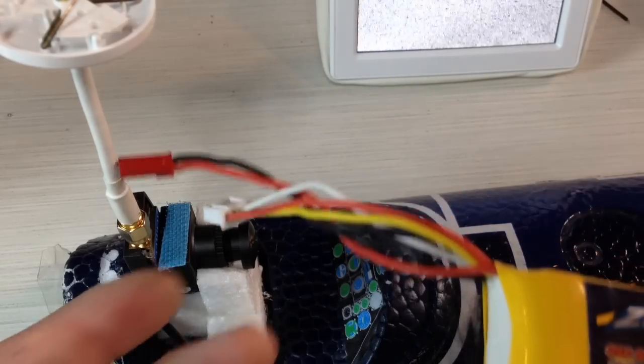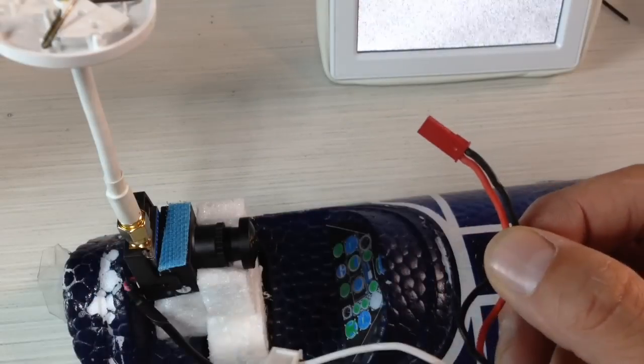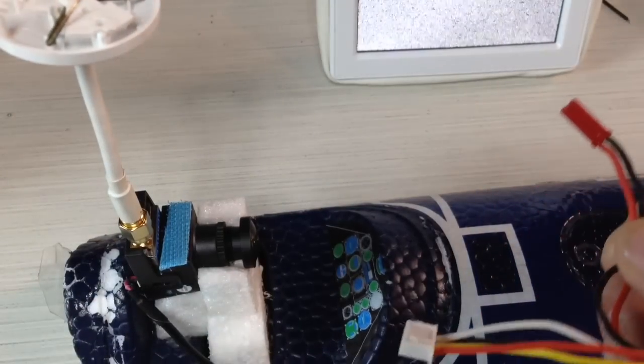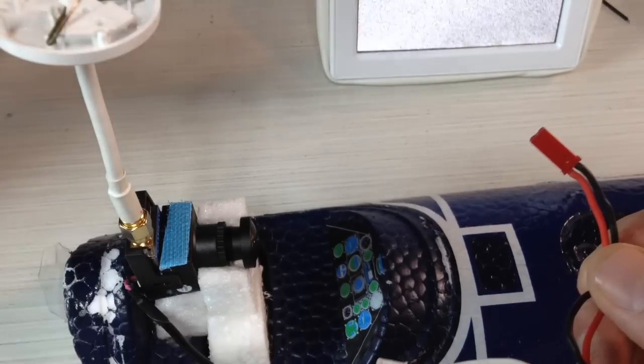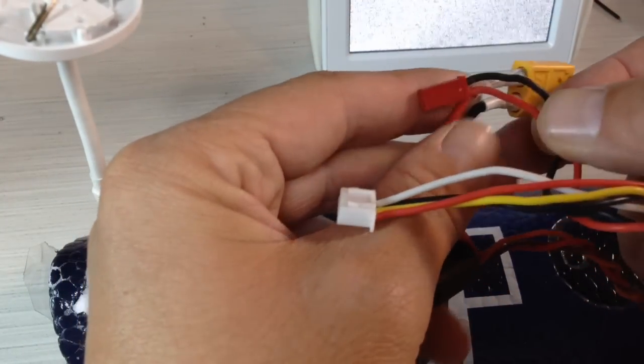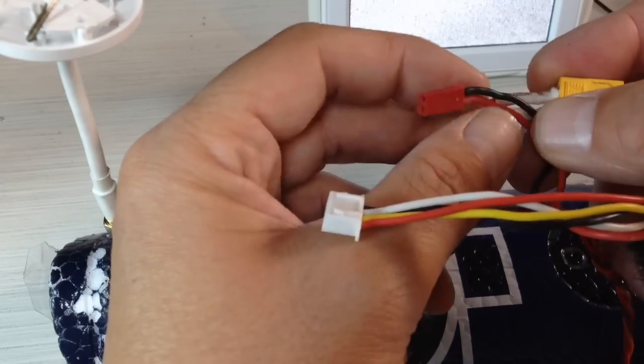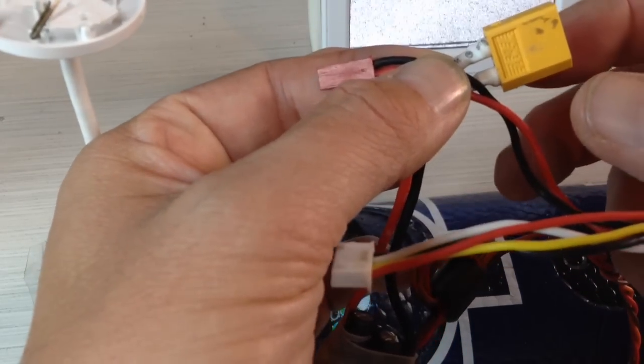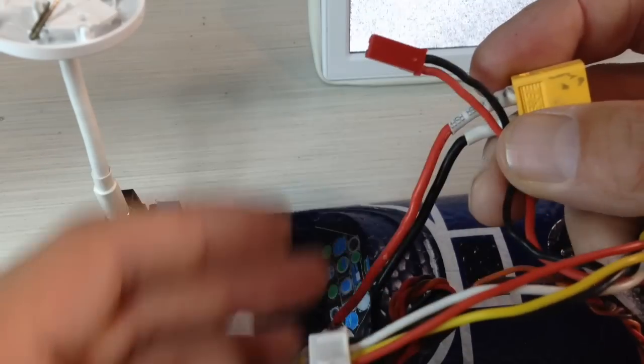The second way would be to tap a JST lead off of your main ESC. So basically you would have your ESC lead and you would tap a female end of a JST coming off of your main leads right here. Solder these in. That's a way of doing it as well. It's a little bit more permanent.